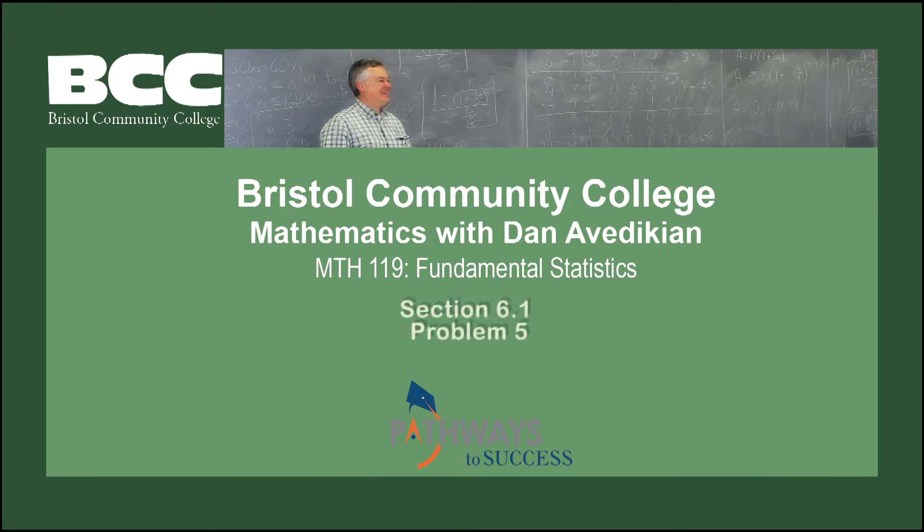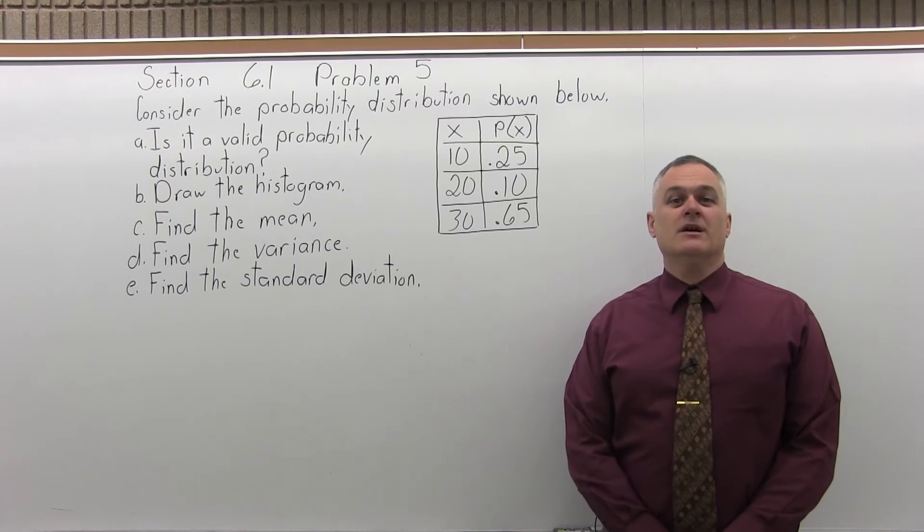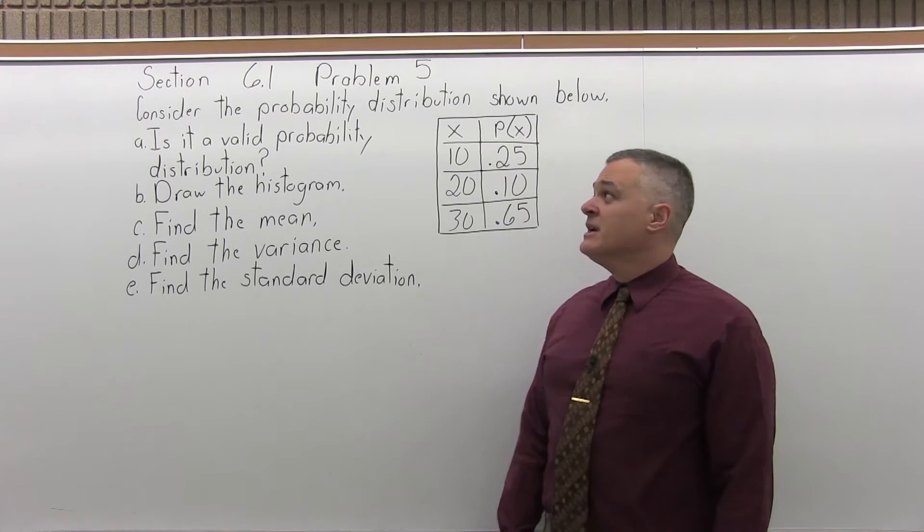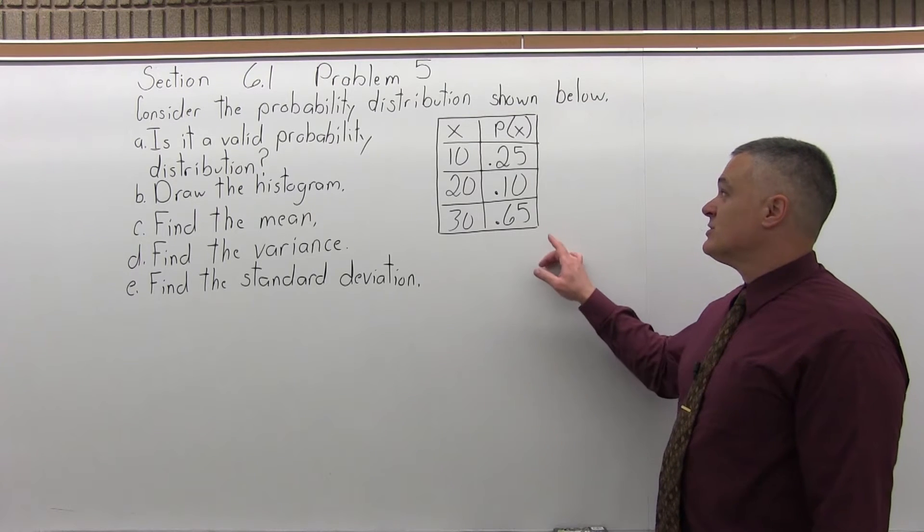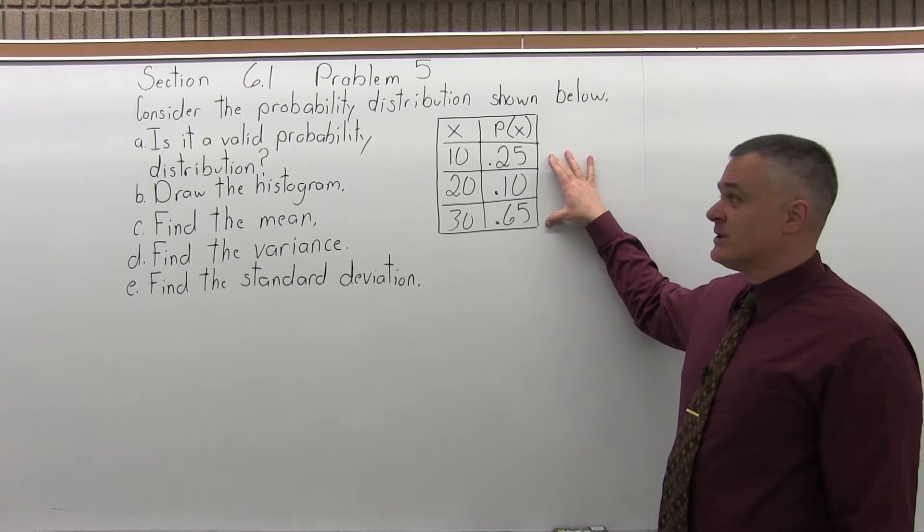Bristol Community College, Mathematics with Dan Avodikian, Math 119, Fundamental Statistics, Section 6.1, Problem 5. This is Section 6.1, Problem number 5. It says, consider the probability distribution shown below. So we have a probability distribution.